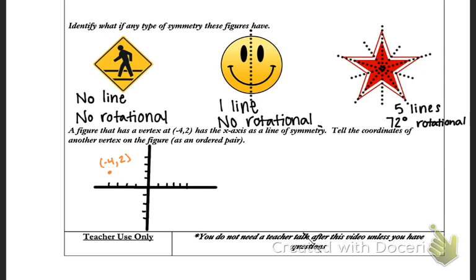We're told that the figure has the x-axis as a line of symmetry. We don't know what the figure looks like. We just know we have the point negative 4, 2 and the x-axis as a line of symmetry. So you're going to take that point and reflect over the line of symmetry, much like we did in concept 14b. So after I reflected, I got the point negative 4, negative 2. Thank you.